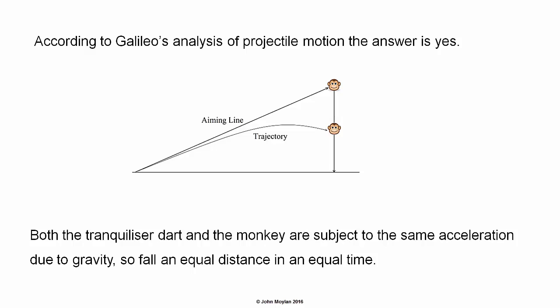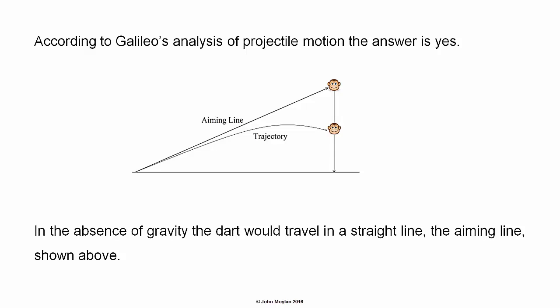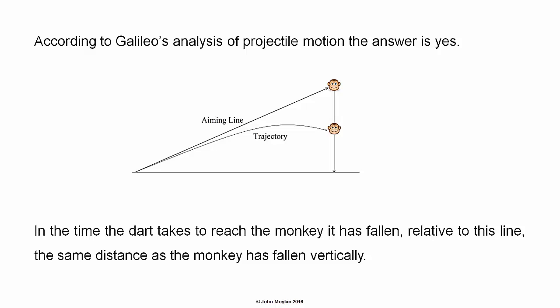The dart hits the monkey because both the tranquilizer dart and the monkey are subject to the same acceleration due to gravity, so they fall an equal distance in an equal time. In the absence of gravity, the dart would travel in a straight line — the aiming line. In the time it takes the dart to reach the monkey, the dart has fallen relative to this line the same distance as the monkey has fallen vertically.